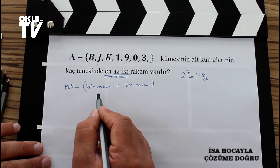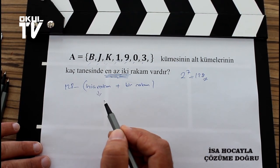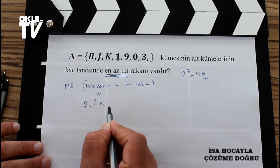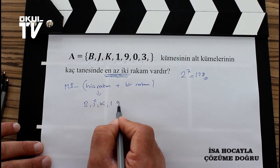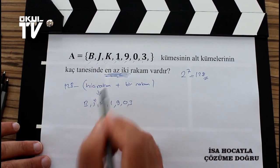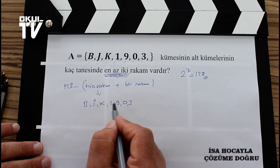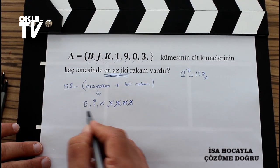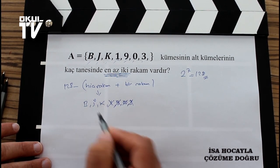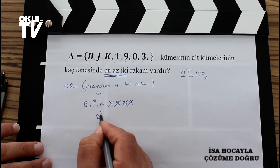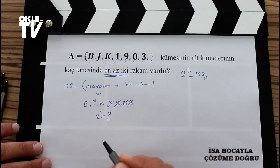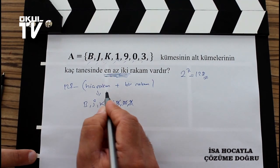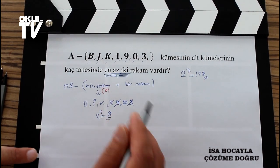O zaman bakalım arkadaşlar, şimdi içerisinde hiç rakam olmayanlara bakalım. Kümemizin elemanları bir daha söylüyorum: B, J, K ve 1, 9, 0, 3. İçerisinde hiç rakam olmaması demek rakamları silmek demek, sildik rakamları. Arkadaşlar sildiğimiz zaman geriye 3 harfimiz kaldı. O zaman 3 harf ile 2 üzeri 3'ten 8 tane alt küme var. Yani içerisinde hiç rakam olmayan küme sayısı 8 taneymiş.